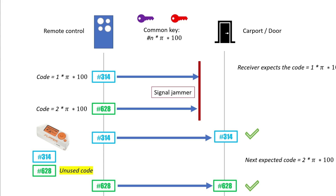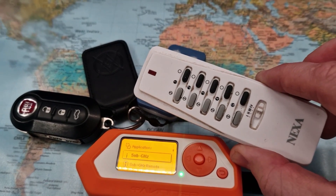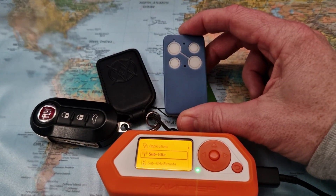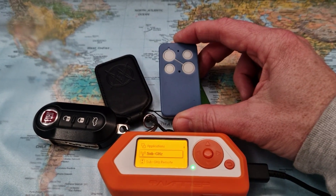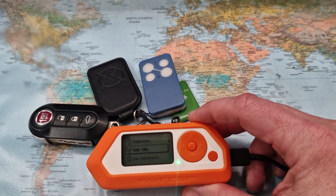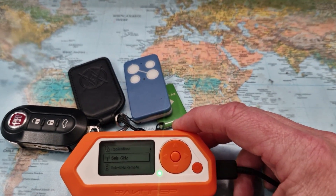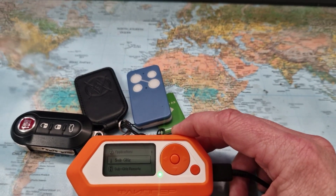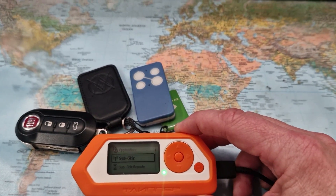In conclusion, the Flipper can replace simple static-code remotes in your house for lights and similar devices, but you cannot use it to emulate your carport or car key because those use rolling codes. Rolling codes do have some vulnerabilities, but they are probably not a realistic threat from someone just carrying a Flipper. You should, however, be aware: if your remote is not responding when you try to open or close your door, it could be someone nearby using a signal jammer to capture your codes for replay later.